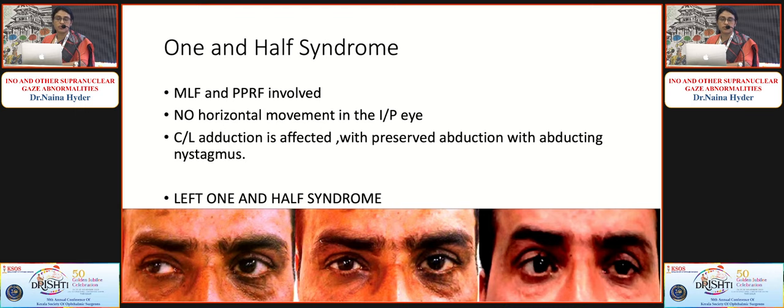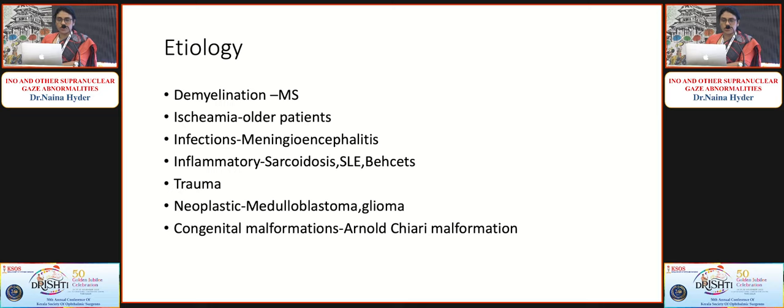In one-and-a-half syndrome, both the MLF and the PPRF are involved. On gaze toward the side of the lesion, there is complete horizontal gaze palsy in the ipsilateral eye, while on gaze to the opposite side there is also adduction deficit. The only remaining horizontal movement is abduction of the contralateral eye. This is a left one-and-a-half syndrome — there is no horizontal movement in the ipsilateral eye, with only abduction preserved in the contralateral eye.